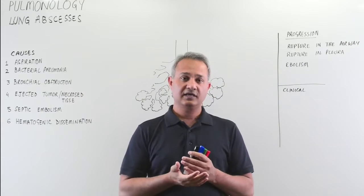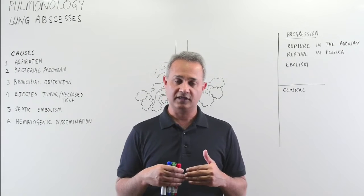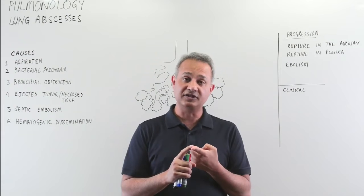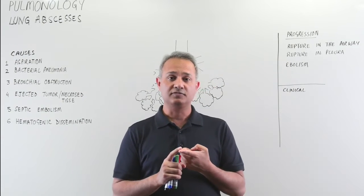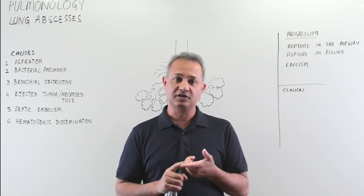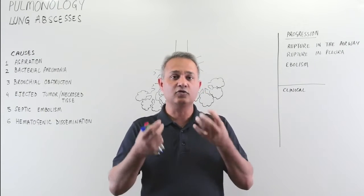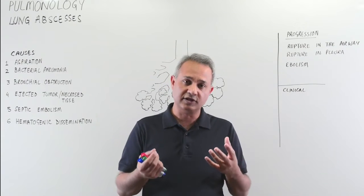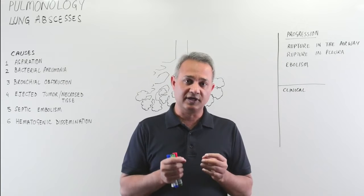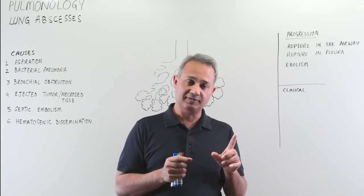Aspiration brings oral flora into the lungs. The dangerous organisms in that flora include Staph aureus, Klebsiella, Pseudomonas, and Haemophilus influenzae. When these go to the lung, they can cause aspiration pneumonia, which can then lead to lung abscesses.